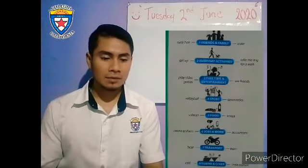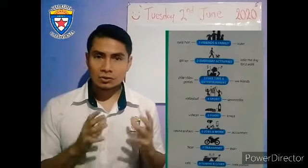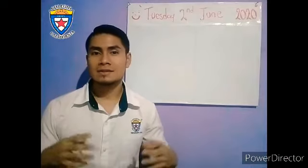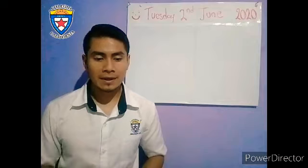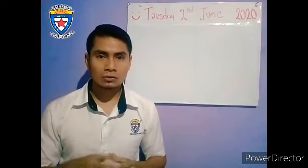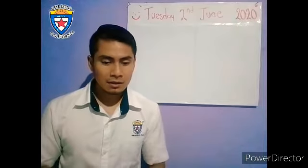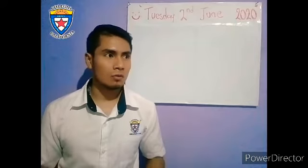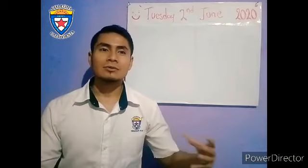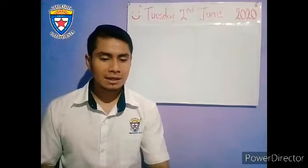En este caso teníamos que sacar el suficiente vocabulario de los temas que aparecen en el ejercicio 1. ¿Cuáles son los temas? Friends and family, everyday activities, free time and entertainment, sports, etc. El ejercicio constaba en que de cada uno de esos temas ustedes iban a sacar vocabularios relacionados. Por ejemplo, friends and family: nos dan ahí curly hair, sister. Pudimos haber sacado otros vocabularios como father, dog, best friend. Vocabularios que tuvieran relación con familia y amigos.